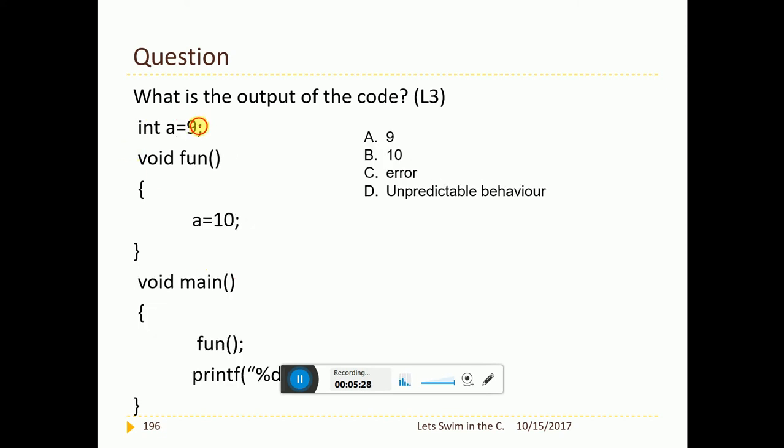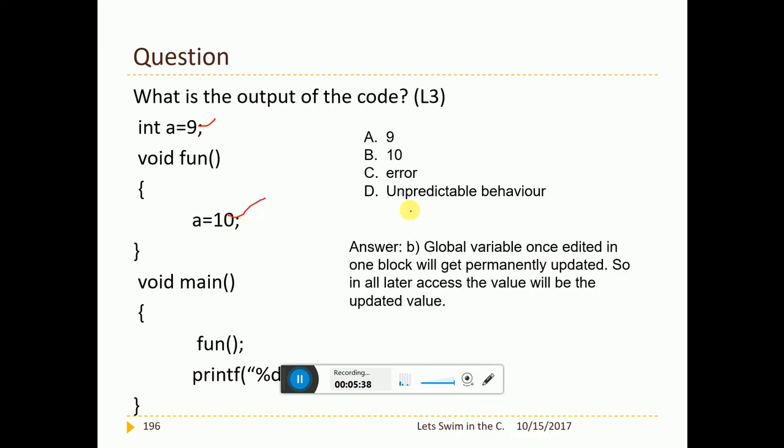Now, next question. Int a equal to 9. It is global space. I have main here. I call the fun here. I am trying to print a. Now, inside fun, I have a equal to 10. So, what would be the output? It is simple. Global variable once edited in one block will get updated permanently. For example, here I got the global variable from a equal to 9 updated to a equal to 10. So, the updated value only will be available here and whenever I print, it will print only the updated value. Hence, answer is 10. Many of us might still say that it is 9 but 9 is wrong. So, please make sure you understand this basic concept.